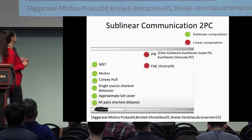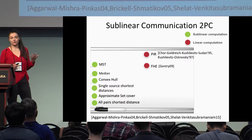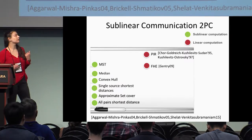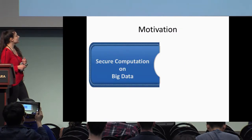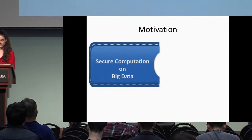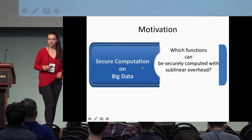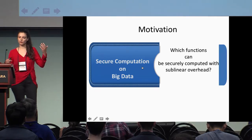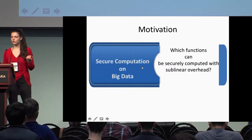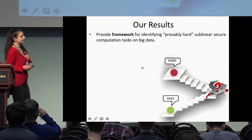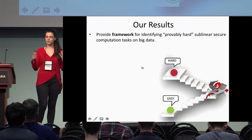So are these functionalities a special case? Can we have more functionalities with these complexities? Can we characterize which functions can and cannot be computed with sublinear overhead? Are the median problem and the convex hull only isolated cases? We're going to provide a framework for separating hard and easy problems.